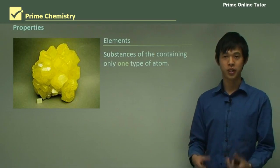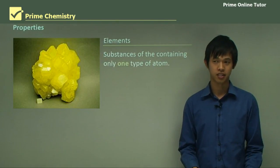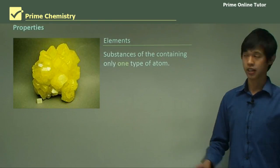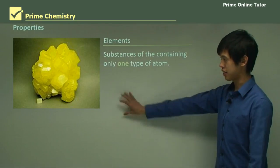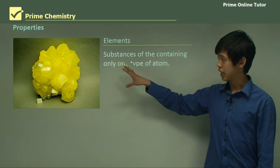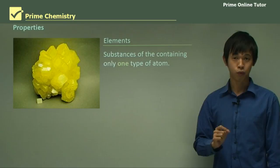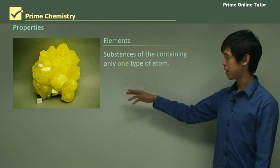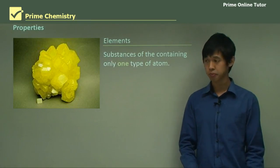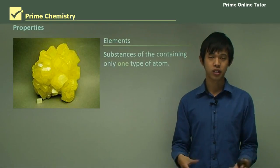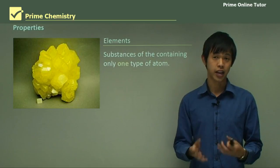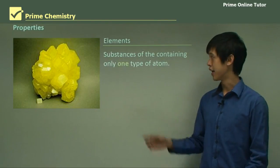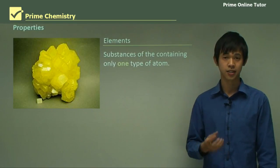The first group we're going to look at is elements — probably the easiest to understand because it's the simplest of the groups, chemically and logically. An element is basically any substance that has only one type of atom inside it. This crystal here is sulfur, and inside that crystal every single atom will be a sulfur atom. There won't be any other atoms — no oxygen or gold or anything like that. Similarly, a bar of gold from Fort Knox would only have gold atoms in it. That's what makes up an element: just one type of atom.